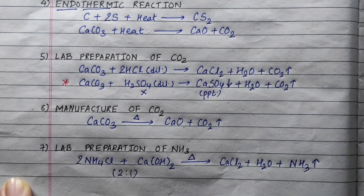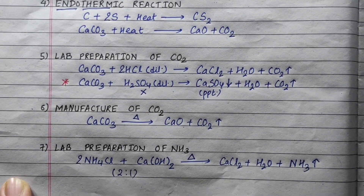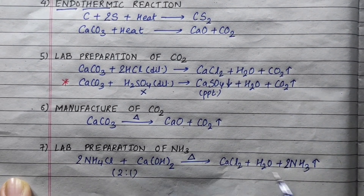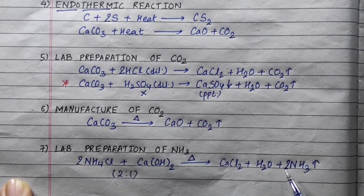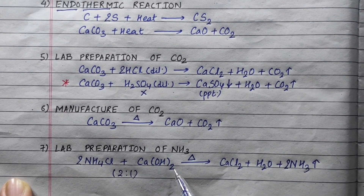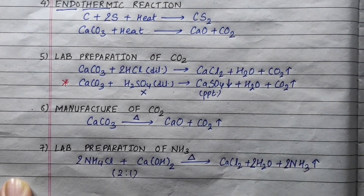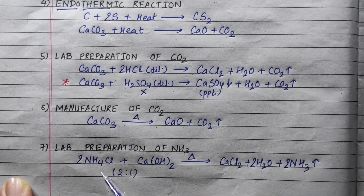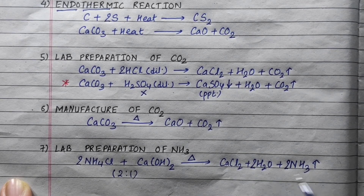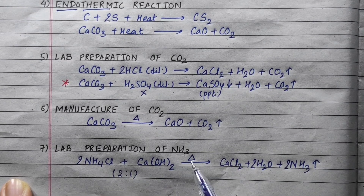Now we balance it. Chlorine balance: nitrogen is 2, calcium is 1. Balancing gives: 2NH₄Cl + Ca(OH)₂ → CaCl₂ + 2H₂O + 2NH₃. Hydrogen count: 4 + 2 = 6. This is the balanced equation for lab preparation of ammonia.